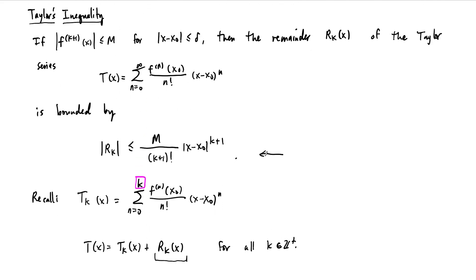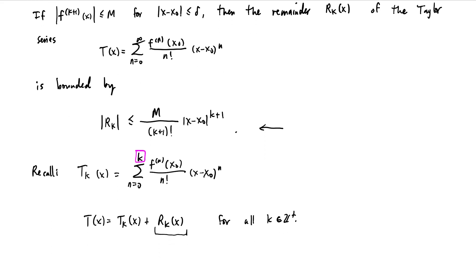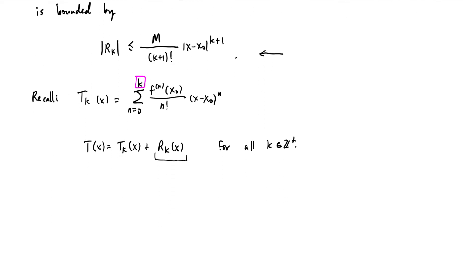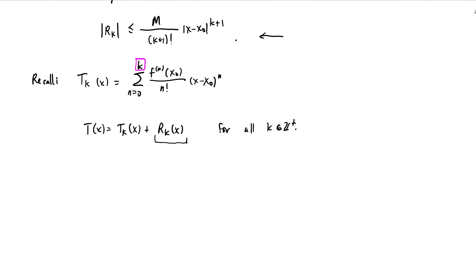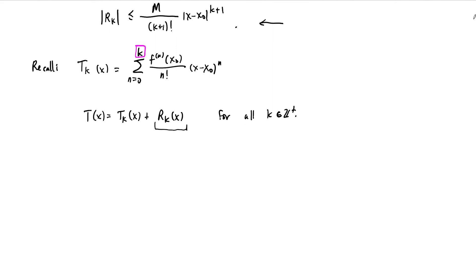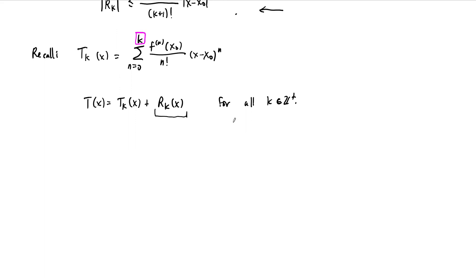To do that, we need this theorem. We don't strictly need it, but this is the most useful tool in trying to prove that a function equals its Taylor series. That's the motivation here. What we'd like to do now is prove at least one step of this. We're not going to prove the whole thing, but let me show you how it works for at least the first remainder, and from there hopefully we can get the idea.